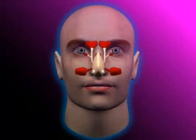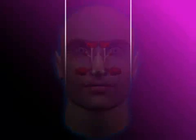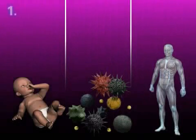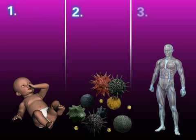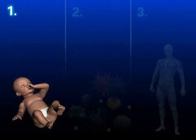A mucosa infection can have many different causes. These can be subdivided into three broad categories: rhinogenic, exogenic, and endogenic causes. The following examples explain these mechanisms.